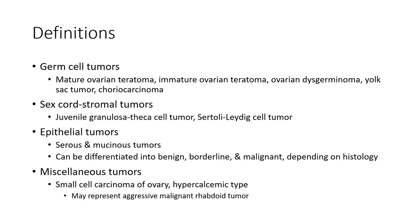Definition. Tumor types include mature ovarian teratoma, ovarian dysgerminoma, yolk sac tumor, embryonal carcinoma, sex cord stromal tumor, juvenile granulosa cell tumor, thecal cell tumor, Sertoli-Leydig cell tumor, and epithelial tumors — serous and mucinous — which can be differentiated into benign, borderline, and malignant depending on histology.